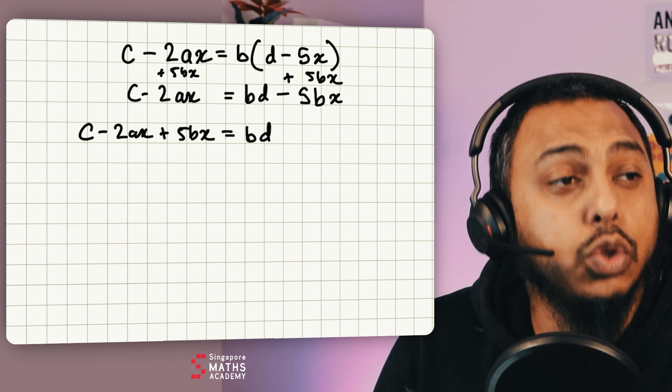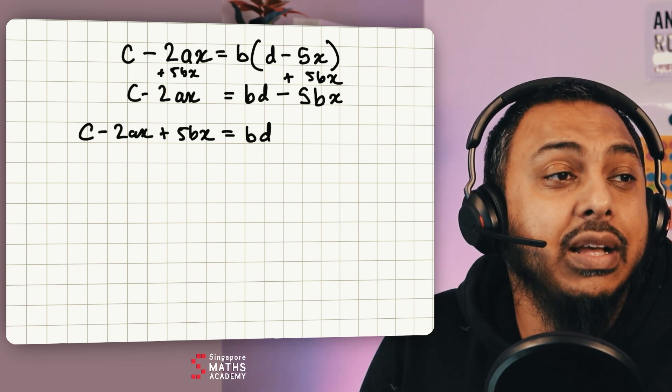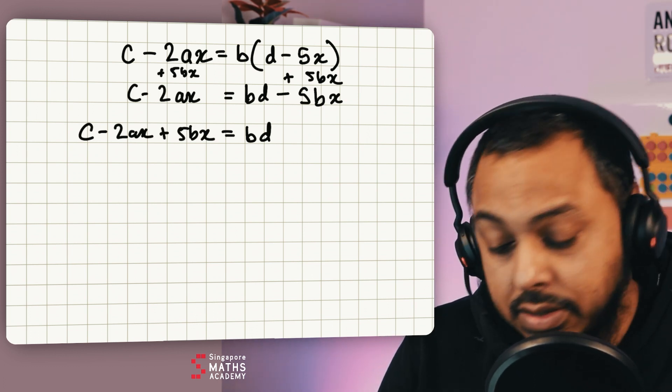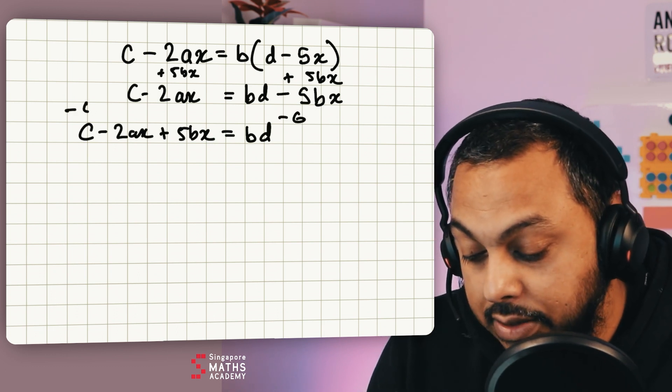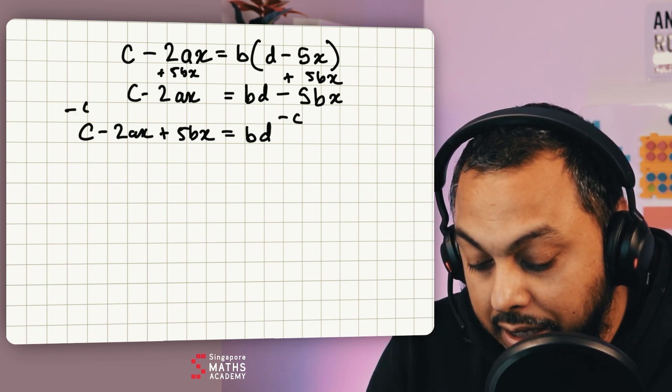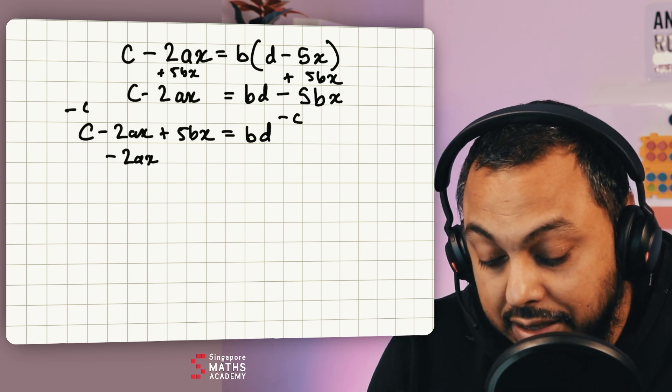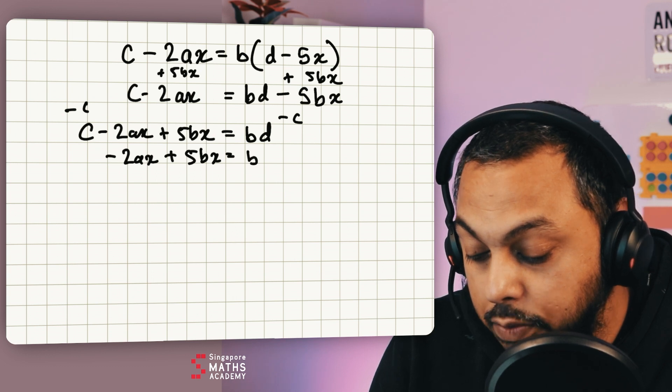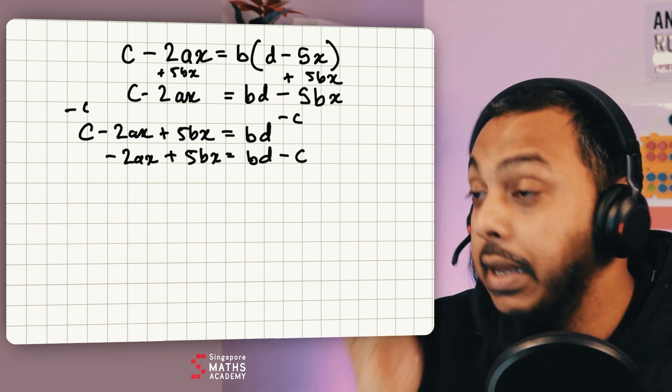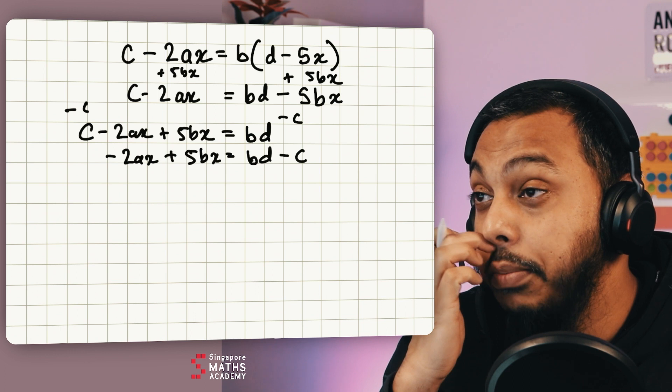So I can take away c on both sides and so I get negative 2ax, so don't forget the negative sign, plus 5bx is equal to bd take away c. So sometimes you might write c take away bd which would not be correct.